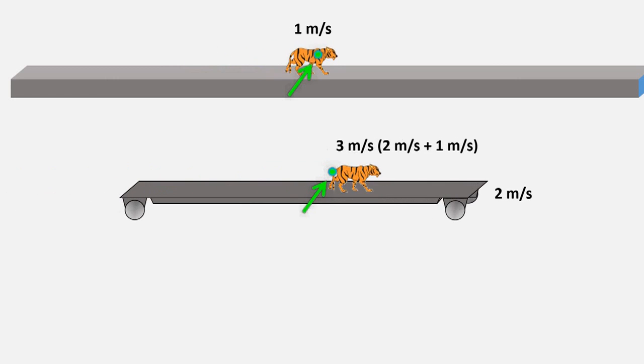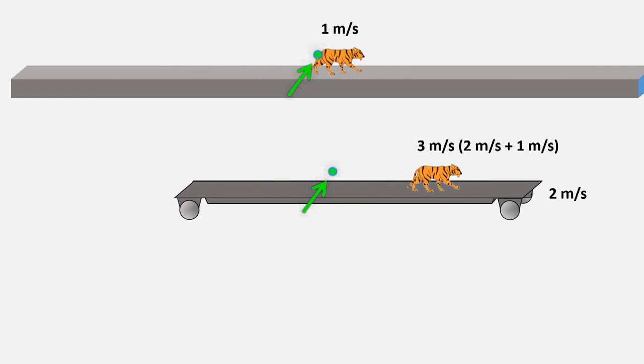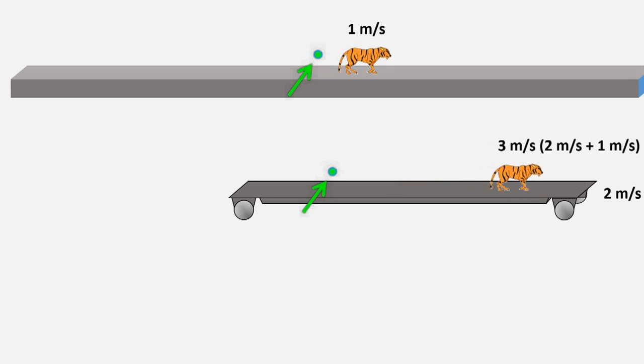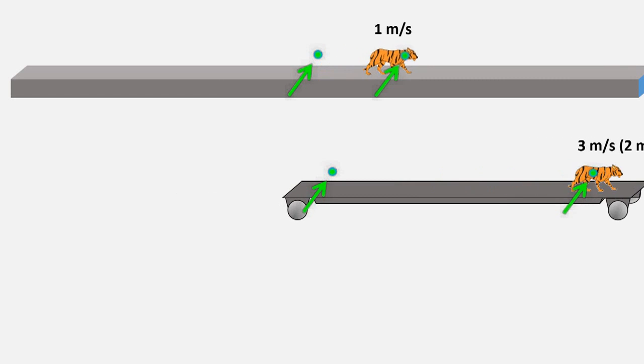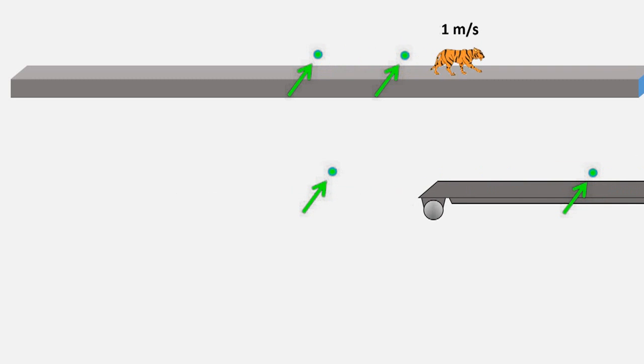If we mark the position of each tiger at a given instant, wait a few seconds and then mark their positions again, we can see that the bottom tiger traveled three times further during the time interval because it was traveling three times faster.